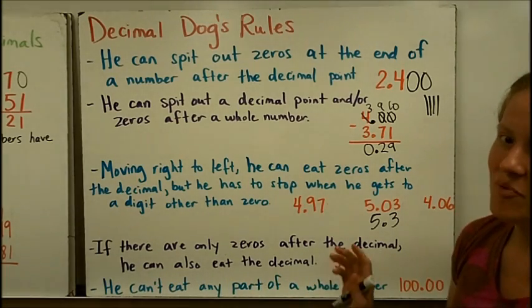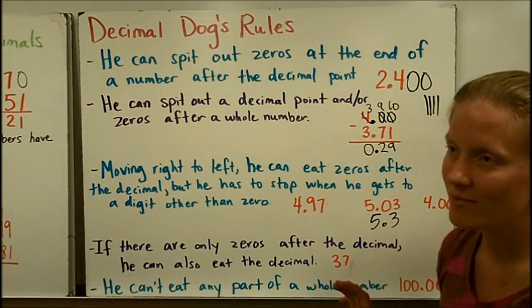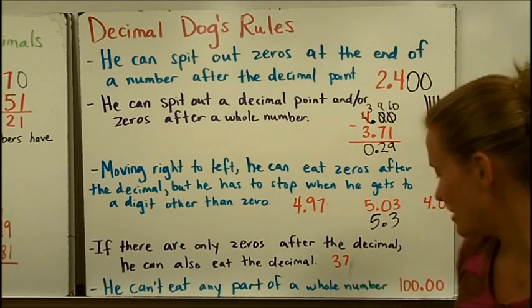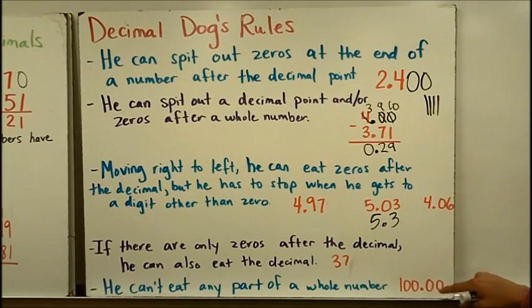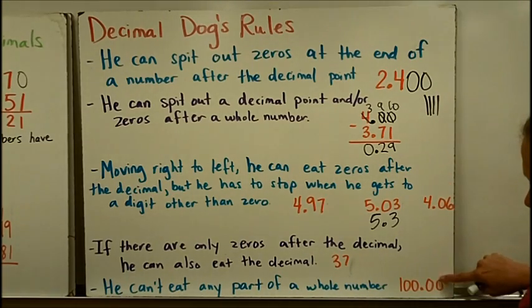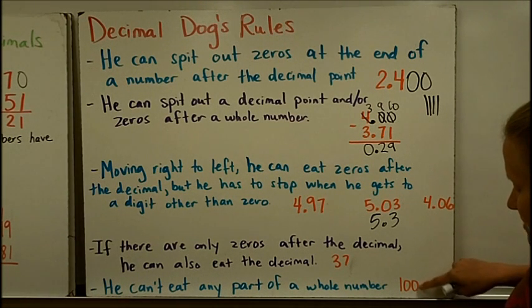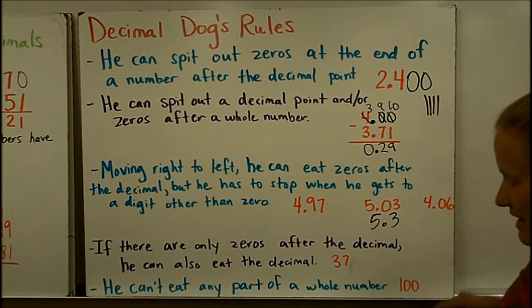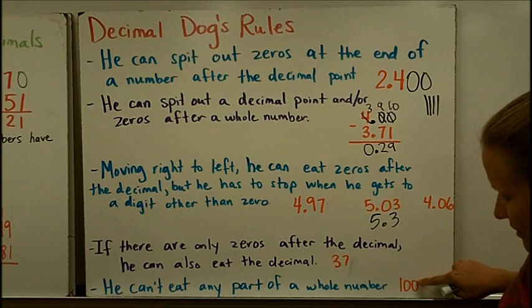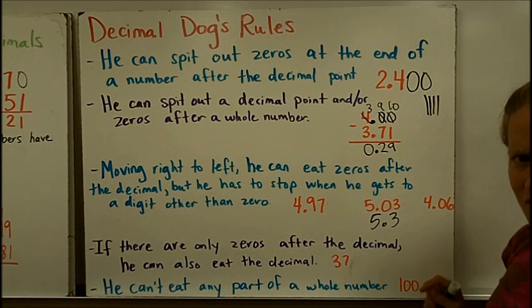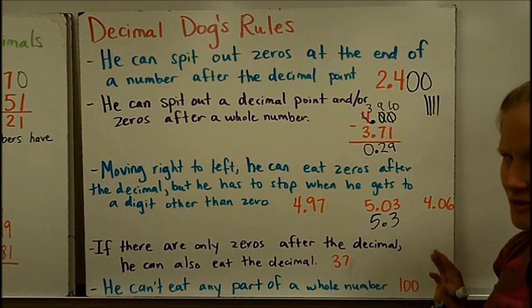He can't eat any part of a whole number. That's really important. Decimal dog can't change a whole number at all. In this case, this looks like a hundred dollars, right? Decimal dog can eat the zero, eat the zero, eat the decimal. But of course he can't eat another zero because that would change a hundred dollars into ten dollars.